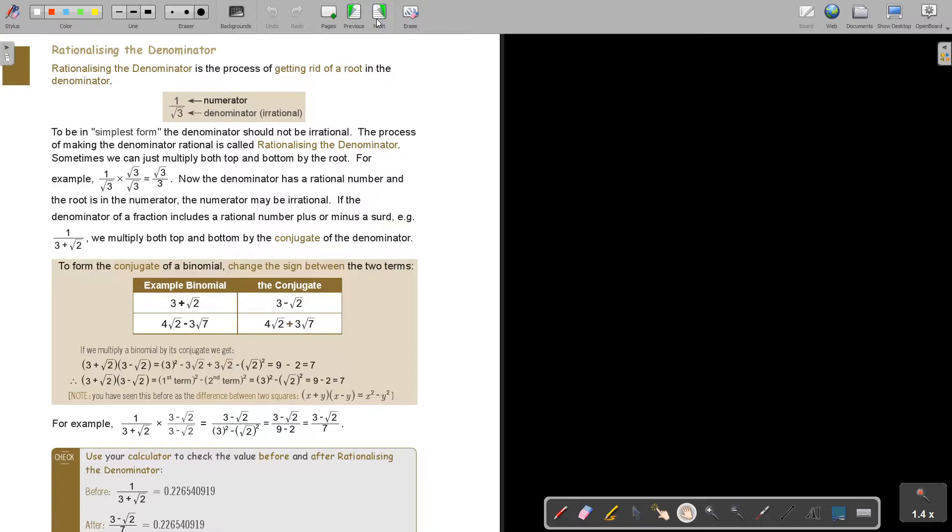This is a technique that we use a lot in mathematics and it's actually for simplifying, and they call it rationalizing the denominator. Rationalizing the denominator is the process of getting rid of a root in the denominator. So basically the root will end up in the numerator instead. To be in the simplest form the denominator should not be irrational. The process of making the denominator rational is called rationalizing the denominator.